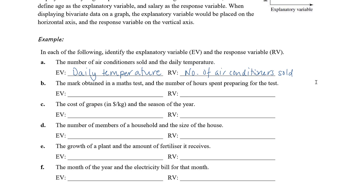Next: the mark obtained in a maths test and the number of hours spent preparing for the test. Generally speaking, we would assume that the more hours one spends preparing for the test, the better their mark is going to be. It is likely to be the number of hours studying that explains the result on the test, not the reverse. So the explanatory variable is the number of hours spent preparing and the response variable is the mark obtained in the test.